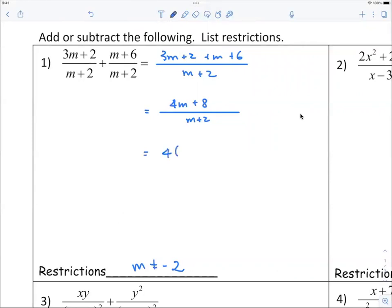And then when you factor out the 4 out of the numerator, you've got this, and you have the final answer 4. So this addition of fractions would yield the answer 4, and m cannot equal negative 2.